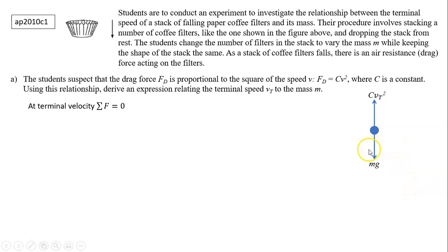Here is a free body diagram of the coffee filters at terminal velocity. You have upward drag force. At terminal velocity, it's c times vt squared. And you also have downward gravity. These two forces have to be the same because net force equals zero. So from here, we can relate vt to m through this relationship: vt squared equals mg over c.